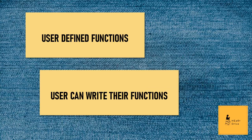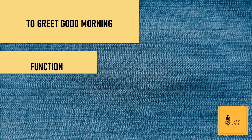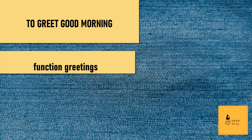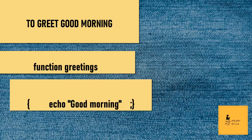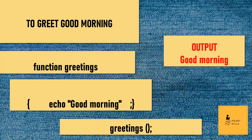User-defined functions are functions which the user writes on their own based upon their needs. Let's write a user-defined function for greetings. The function name is greetings, so I am giving the word greetings here. Then let's define our function — our function is to print good morning, so I am giving good morning inside the echo statement. And to call the function, function calling code is used. As the function is called, we will get the output good morning.